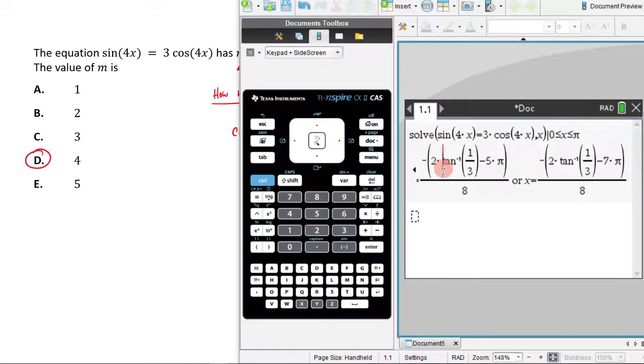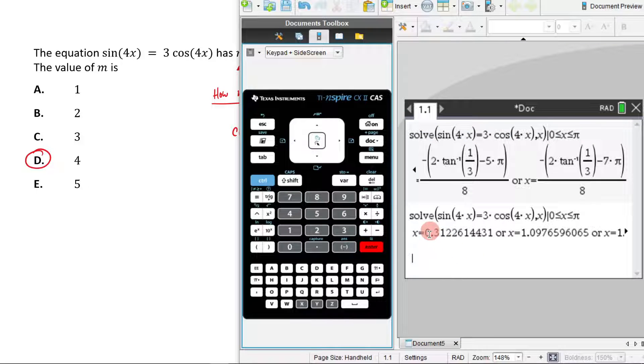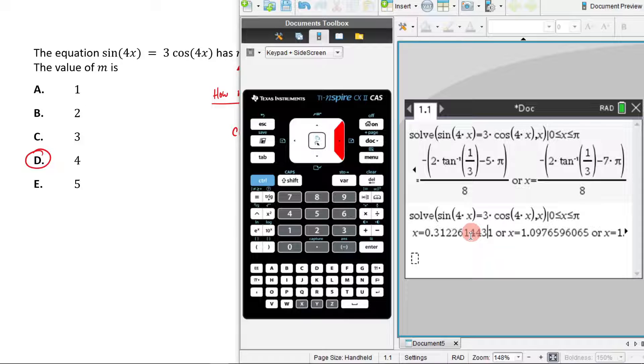Now if you wanted to, instead of getting these really ugly answers, if we come here and hit control enter, they just give it to us as decimals. And now when we scroll across, it just makes it maybe a little bit easier to see that you in fact have four solutions.